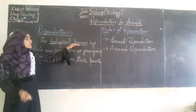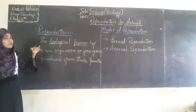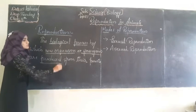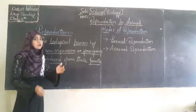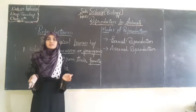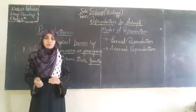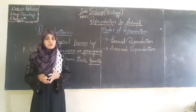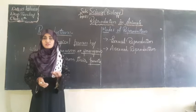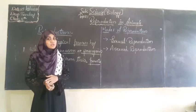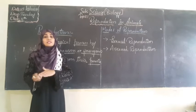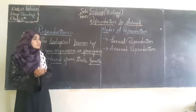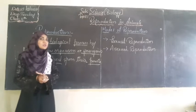Reproduction is a living process in which new organisms are produced from their parents. There are so many kinds of animals in the world, and human beings are also a type of animal. Along with excretion, digestion, and respiration, we also perform reproduction. All living animals give birth to their own kind — that is nothing but reproduction.